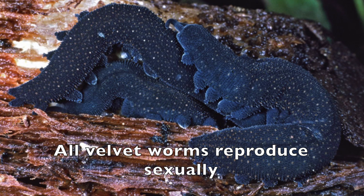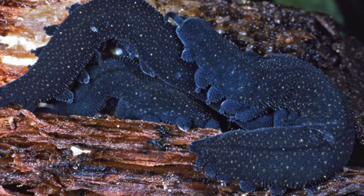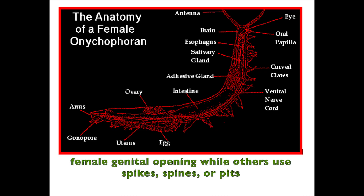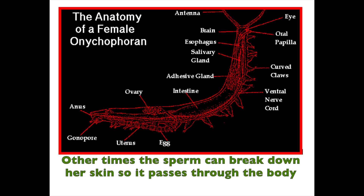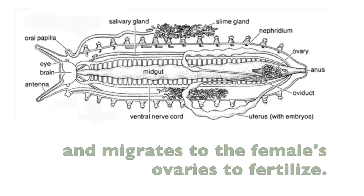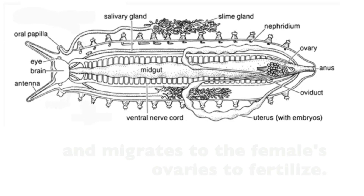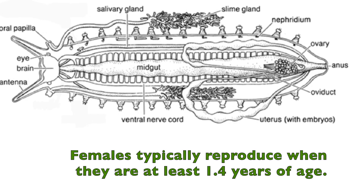All velvet worms reproduce sexually besides Epiperipatus and Therne. Some species drop their spermatophores into the female genital opening, while others use spikes, spines, or pits to hold the sperm for transfer to the female. Other times the sperm can break down her skin so it passes through the body and migrates to the female's ovaries to fertilize. Females typically reproduce when they are at least 1.4 years of age.